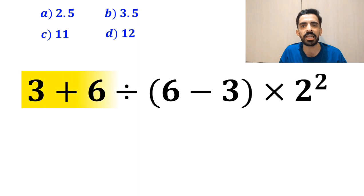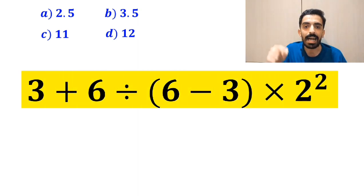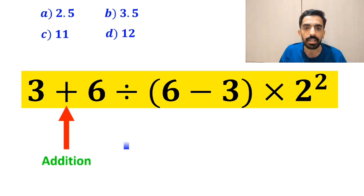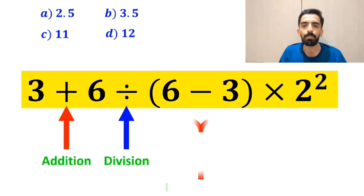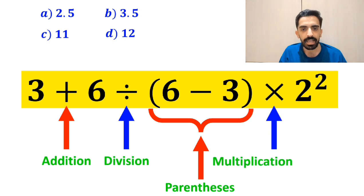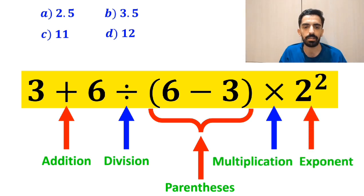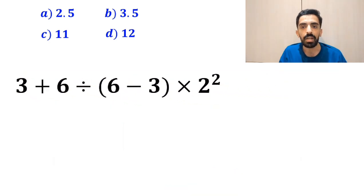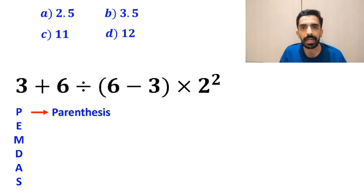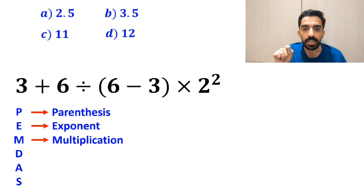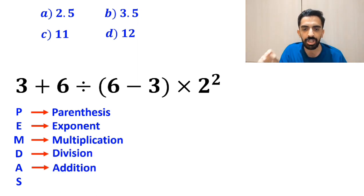Now let me show you how to solve this expression properly. As you can see in the image, in this expression we have an addition sign, then a division sign, followed by parenthesis, then a multiplication, and finally an exponent. To solve this problem, we must follow PEMDAS. In this acronym, P stands for parenthesis, E stands for exponent, M stands for multiplication, D stands for division, A stands for addition, and S stands for subtraction.